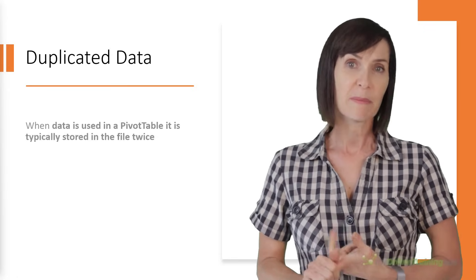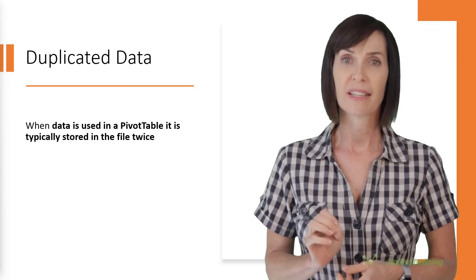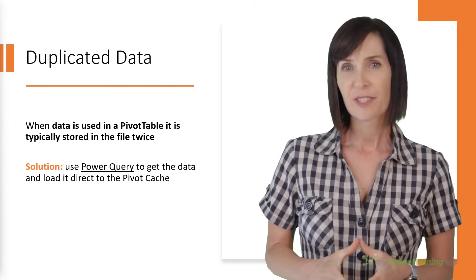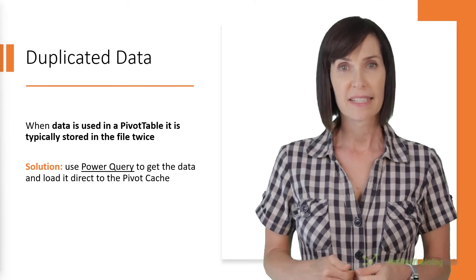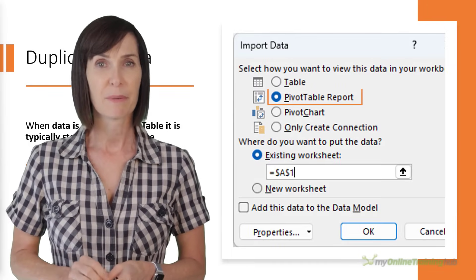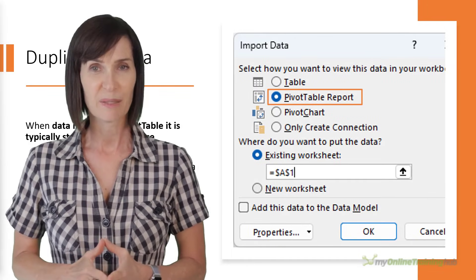When data is used in a pivot table it's typically stored in the file twice, once in the worksheet and again in the pivot cache. The solution is to use Power Query to get the data and load it directly to the pivot cache by selecting pivot table report in the import data dialog box.